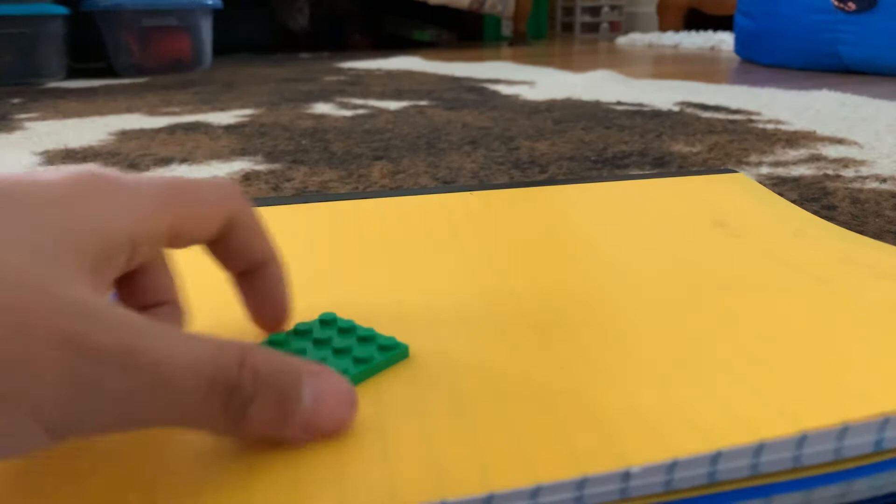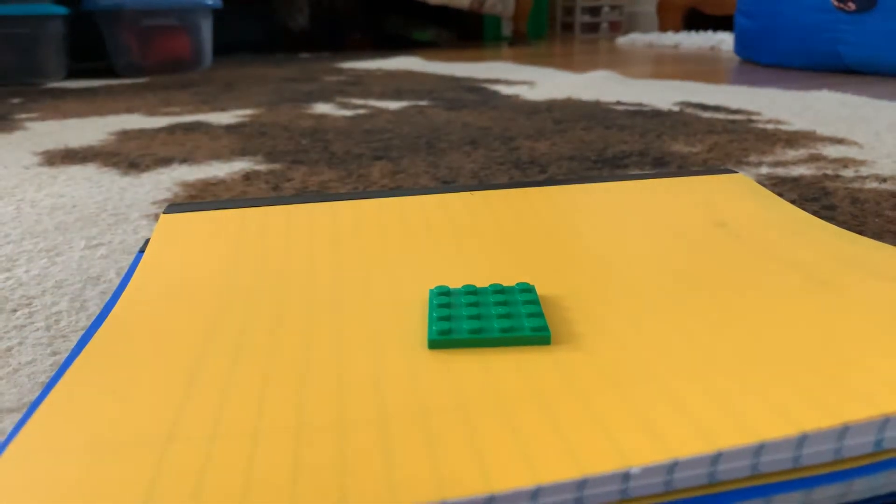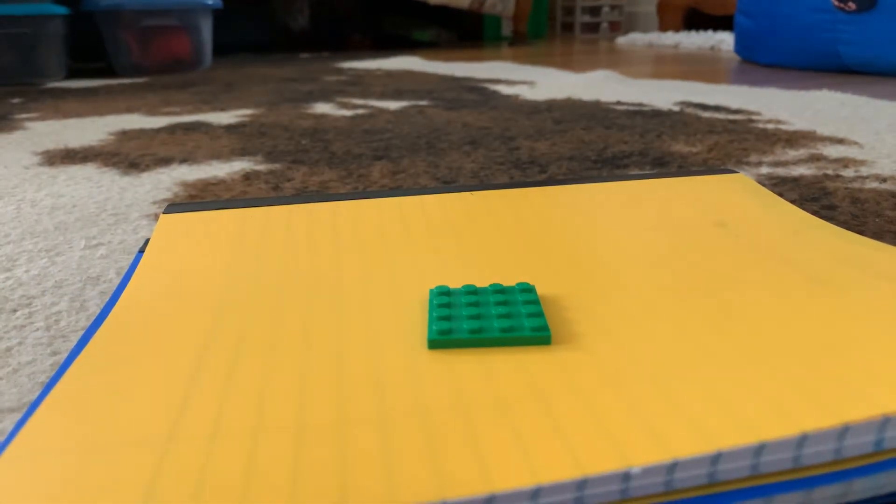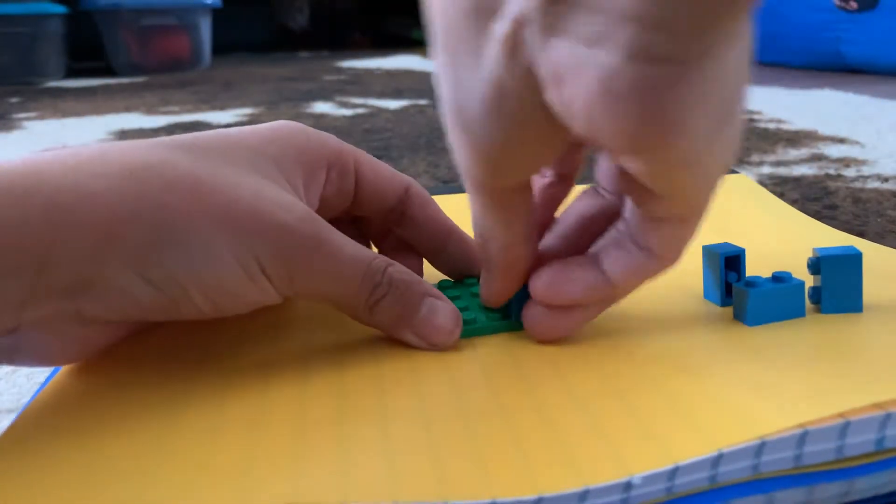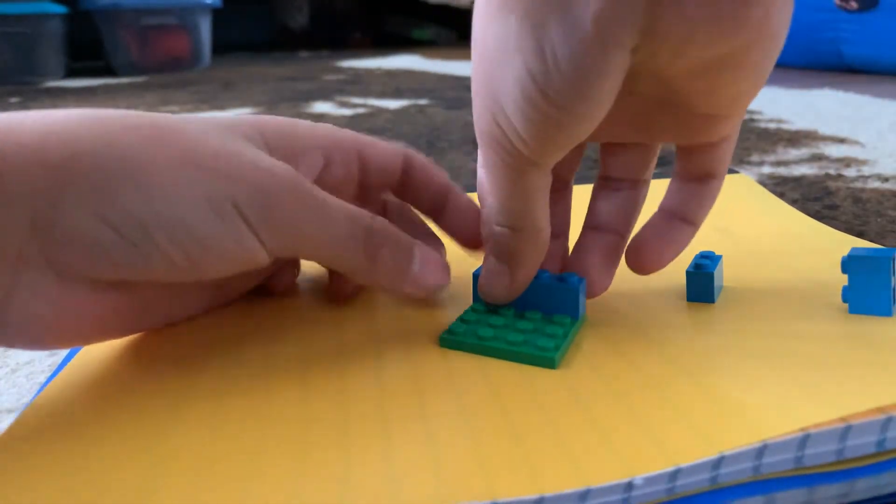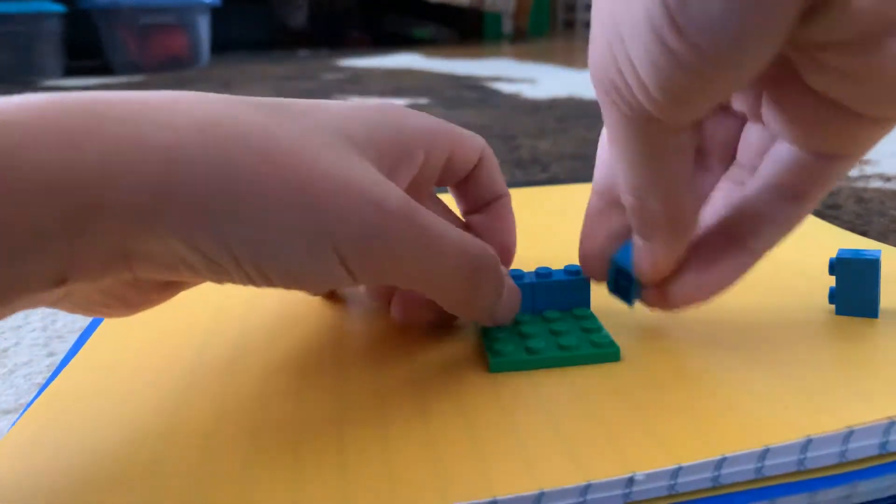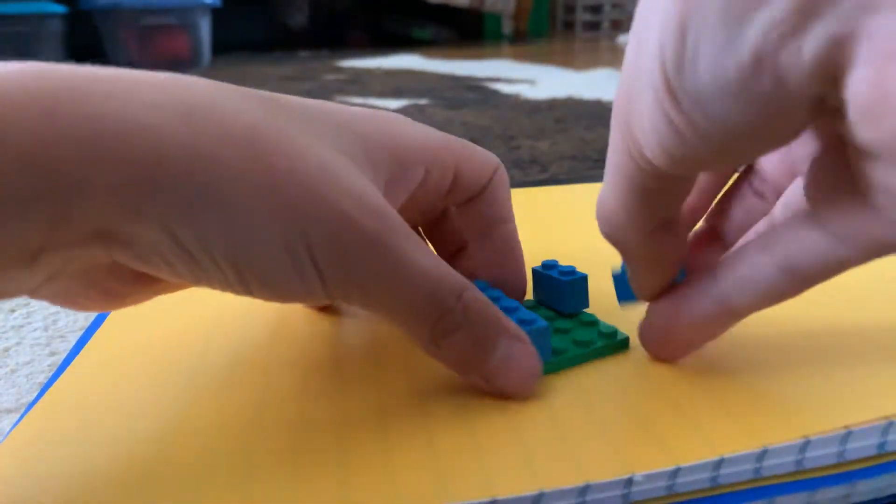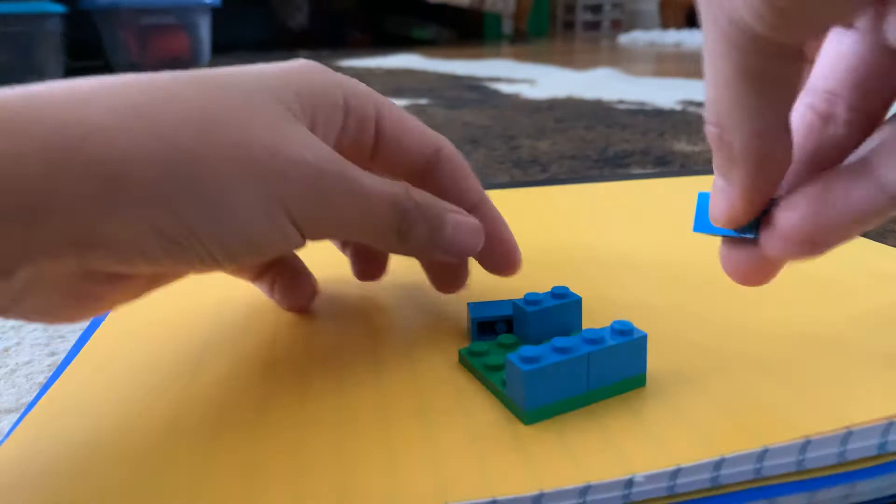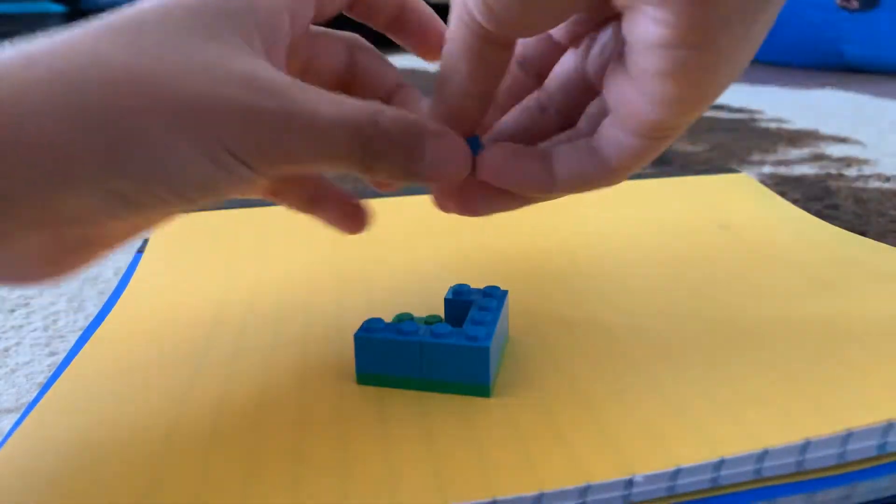So first, I'm going to take a 4x4 flat and place it right here. Next, I'm going to get some 1x2s. You're going to place it all around, and you will have this.